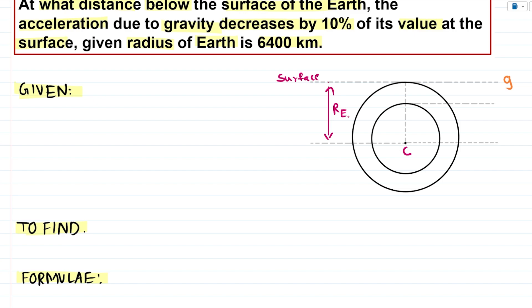The distance between the center and surface is equal to the radius of the earth. From the surface, we go a distance d inside the earth, so we are now at a depth d from the surface. At this point, when we measured the acceleration due to gravity, the value was different — there was some variation in it — and we denote that varied value as gd.